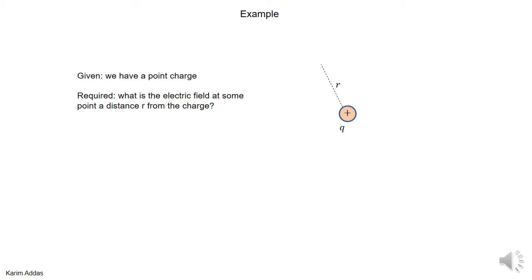In this example, we want to actually prove Coulomb's law from Gauss's law. So the given in the problem is that you have a charge Q, and it's located at some point, it's a fixed charge.